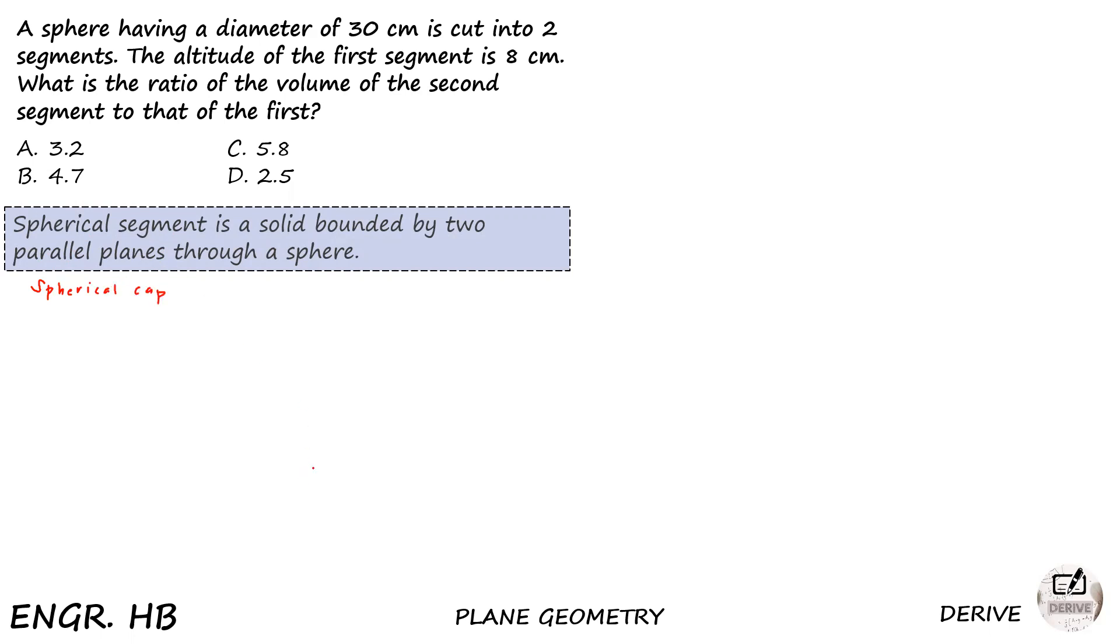So considering again, we have a sphere here of radius small r. We have a cutting plane that will divide the whole sphere into two segments. So this is the first segment and this is the second segment.